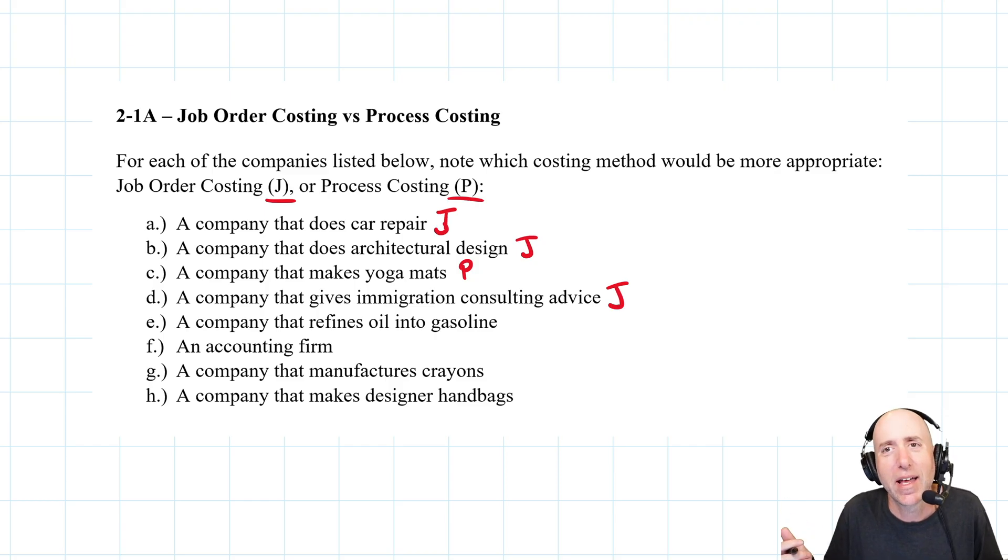An accounting firm: everybody's taxes are a little bit different. The accounting firm will spend different amounts of time with different kinds of clients. This has got to be job order. Every job is different and it has different costs.